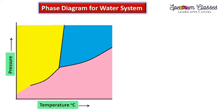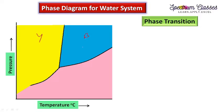Here I have drawn a phase diagram for a system which has three different phases. The yellow color, the blue color, and the pink color each show three different phases. Now, which phase will be the solid phase, which phase will be the liquid phase, and which phase will be the gas phase — this is important to understand.